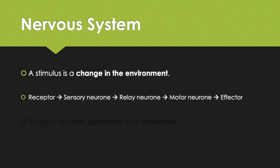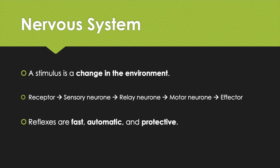The motor neuron connects to an effector. Effectors are things like muscles, or could be glands releasing chemicals like hormones. You need to know about reflexes — they're fast, they're automatic, and they're protective. They help you to survive.